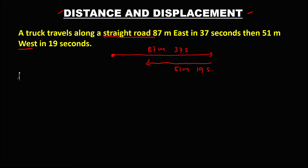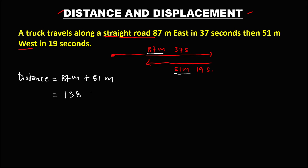To find the distance, just add the two travels: 87 meters plus 51 meters. So the distance equals 138 meters.